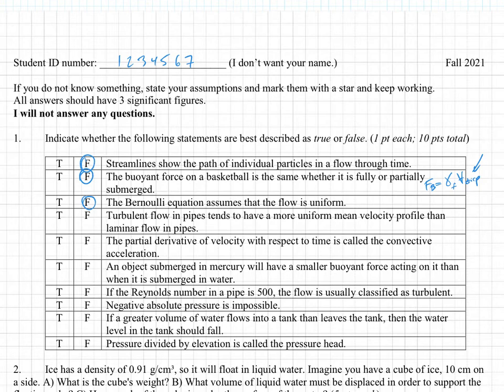Turbulent flow in pipes tends to have a more uniform mean velocity profile than laminar flow in pipes. And that is true due to greater mixing. Laminar flow in a pipe is parabolic, and turbulent flow, due to more effective mixing of momentum from the middle out and from the walls in, tends to be more uniform. So we're going with true.